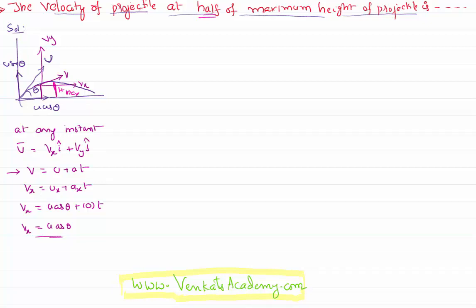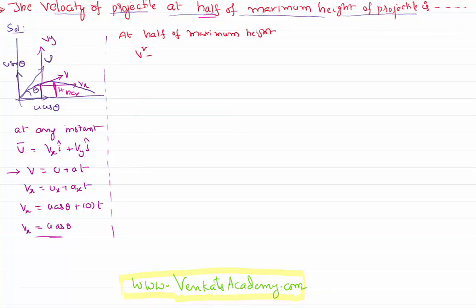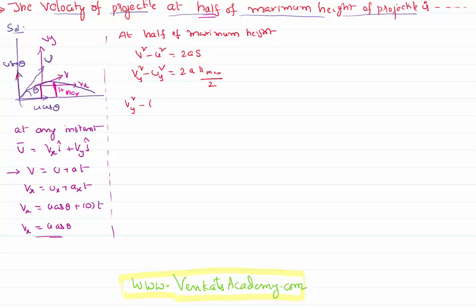Now I want to calculate Vy. For the vertical direction, at half the maximum height, I use the formula V² - U² = 2aS. So Vy² - Uy² = 2a·S, where S = H_maximum/2. That gives Vy² - (u·sinθ)² = 2·(-g)·(H_maximum/2).